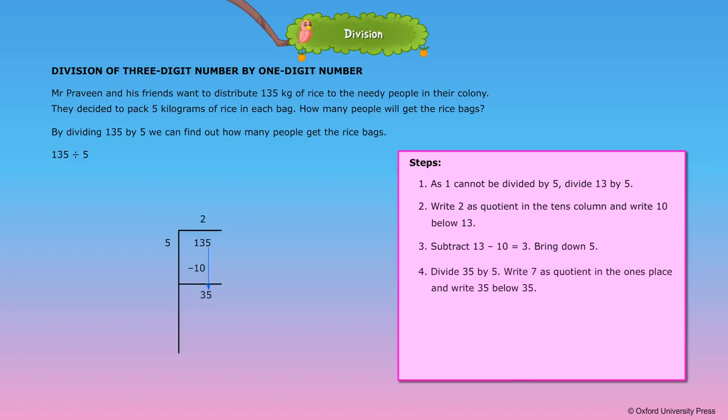4. Divide 35 by 5. Write 7 as quotient in the ones place and write 35 below 35. 5. Subtract 35 minus 35 is equal to 0.